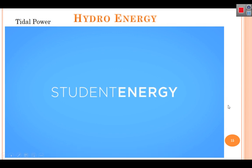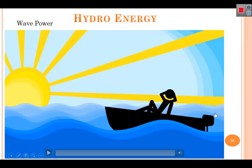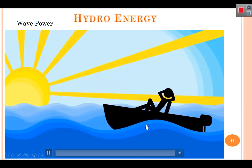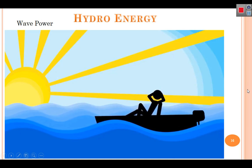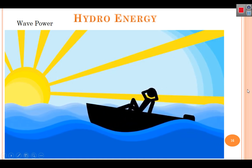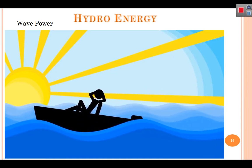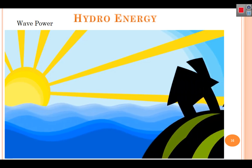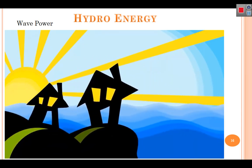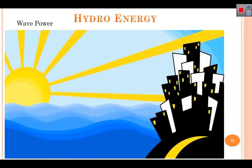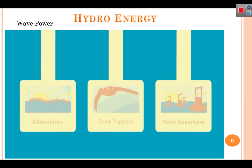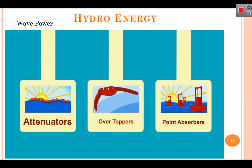Wave energy is created by the movement of the ocean's surface. When a wave rocks a boat back and forth, it's doing work — that energy can be captured to generate electrical power. If harnessed properly, it has the potential to provide 10 percent of the world's energy needs. The three most common methods to harness wave energy are attenuators, overtopping systems, and point absorbers.